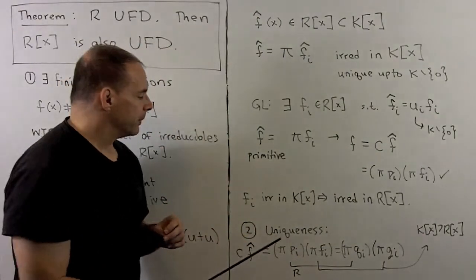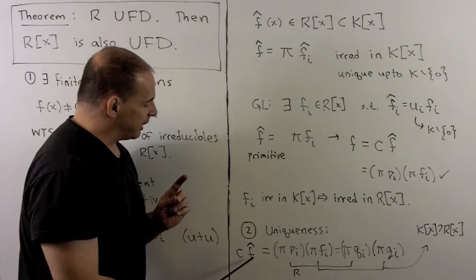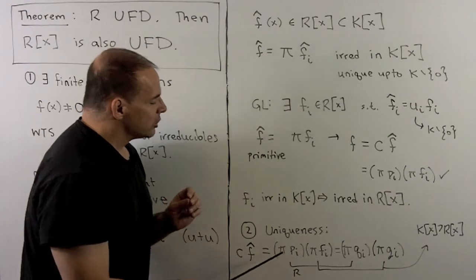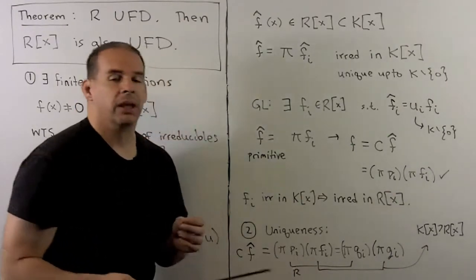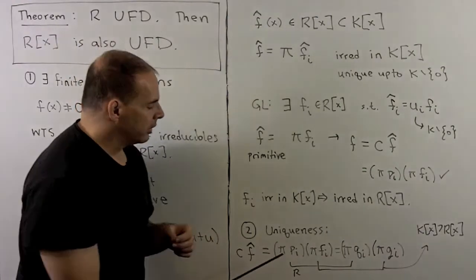For the uniqueness, we have c times f̂ as a splitting of f into content and a primitive. So if I had two factorizations, I would just separate everything out into content and primitives.